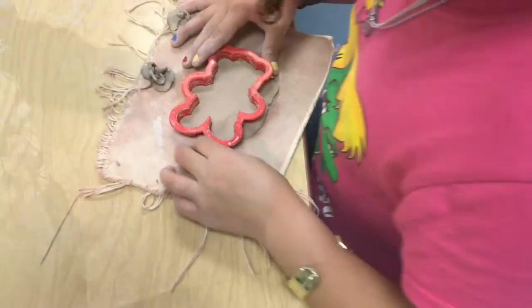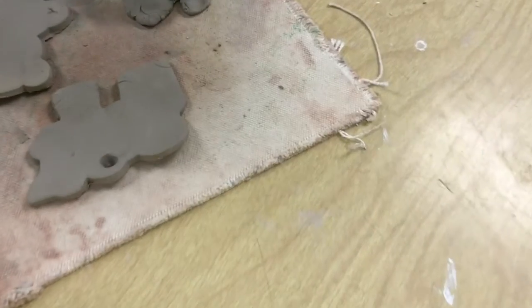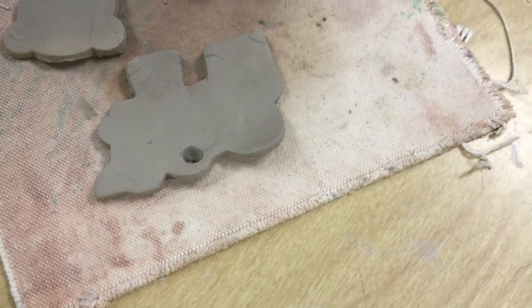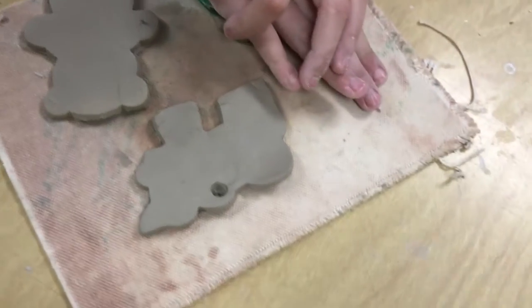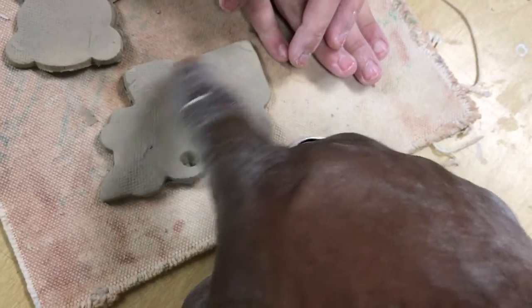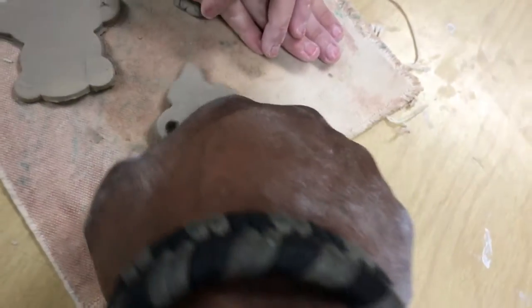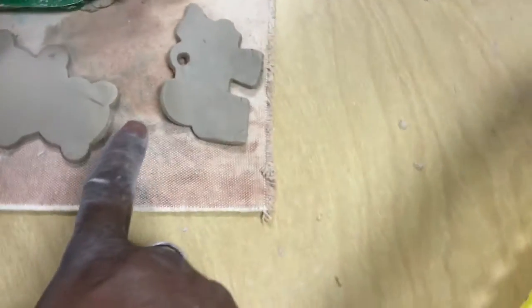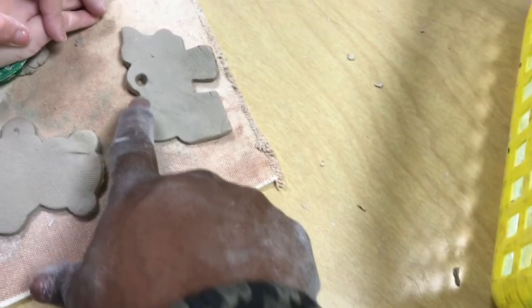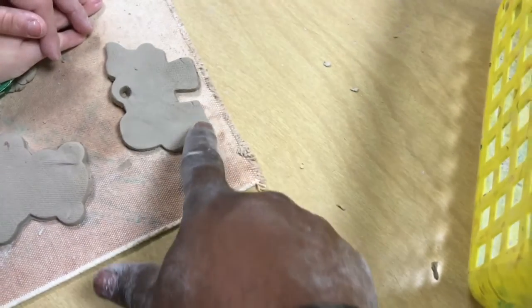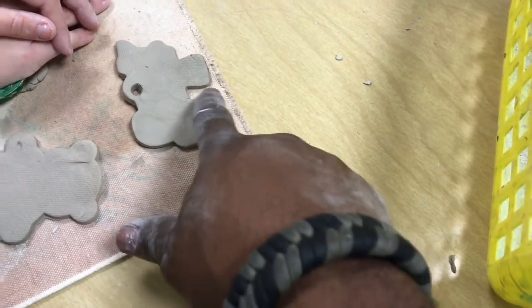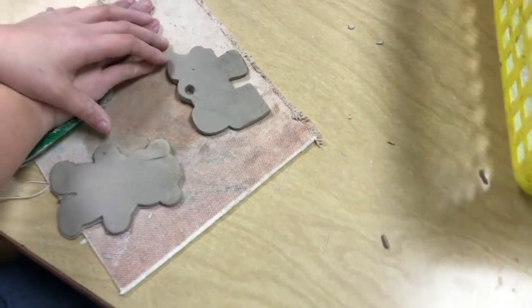That is a choo-choo train. I think you put the hole in the wrong side. You need to put the hole like right here and right here because this is a choo-choo train. It's like the Polar Express. These are the wheels, that's the front, that's where the smoke comes out, and that is where the conductor sits. That's our choo-choo train.